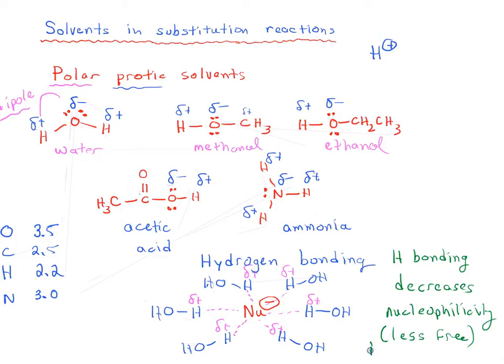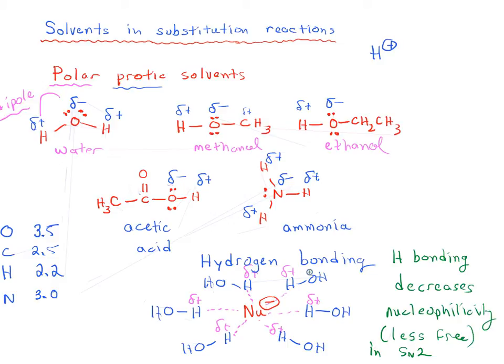If hydrogen bonding occurs, it's going to decrease our nucleophilicity. Everywhere the nucleophile goes, it has this entourage of solvent molecules around it, making it more hindered and less free to react with an electrophile in a substitution reaction. This is most important for the SN2 reaction. You can also think of it in terms of steric bulk — the solvent shell increases the effective bulkiness of your nucleophile, which slows your reaction down considerably. The bottom line is that hydrogen bonding decreases nucleophilicity.